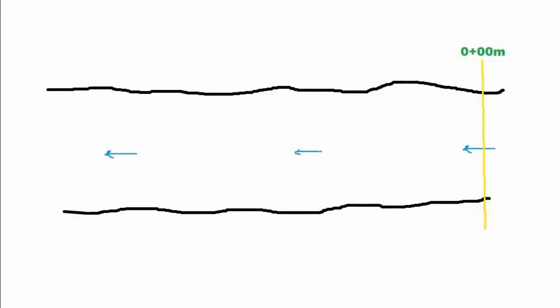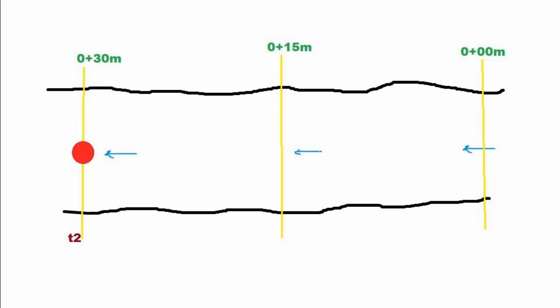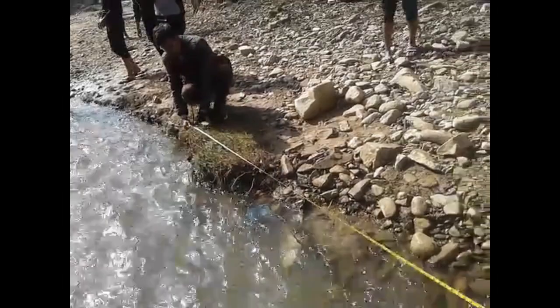Choose an initial section in a stream. Choose two other sections at intervals of 15 meters. Make an object flow from the initial section. Note the time taken to reach section 2, and similarly to reach section 3. This process is repeated 2 to 3 times and finally the calculation is done.